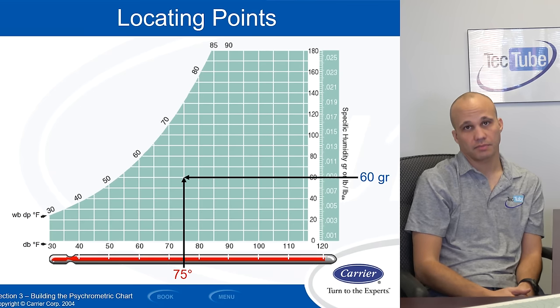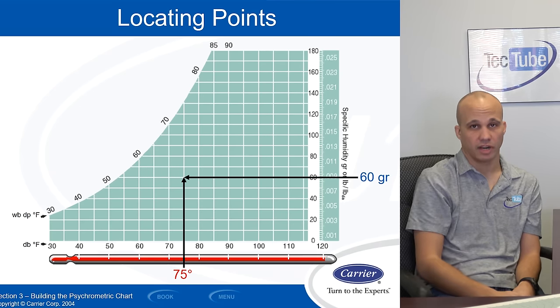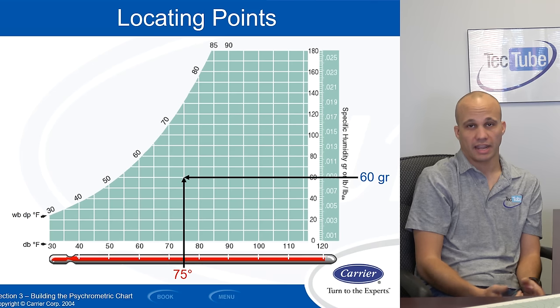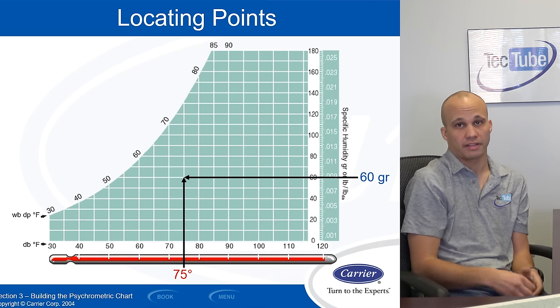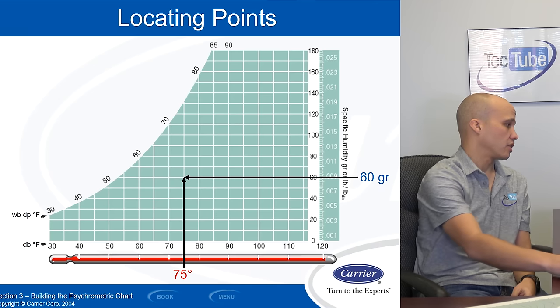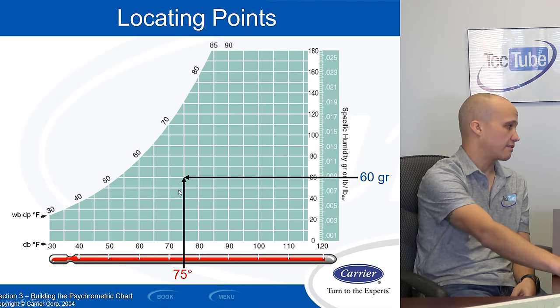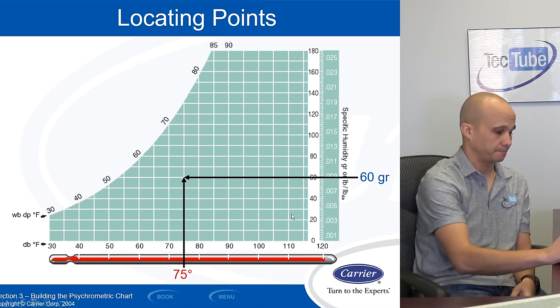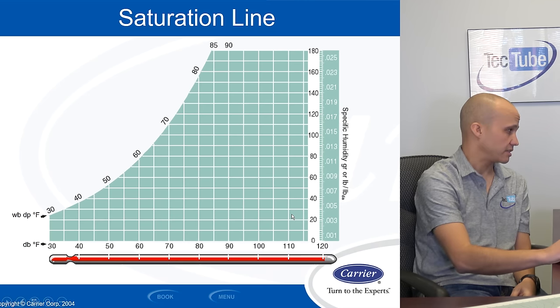So I plot one out. In order to plot something on this chart, I need to know two of those five variables. And once I know those two, I can figure out what the other three are on the chart. That's kind of the purpose of the chart. So if I take a typical room that's 75 degrees with 60 grains of moisture, I would plot a dot right there. I can do that with any of these numbers.